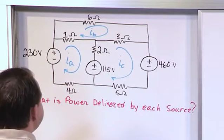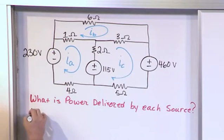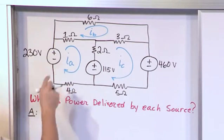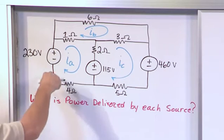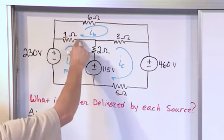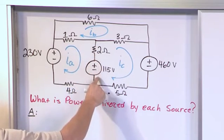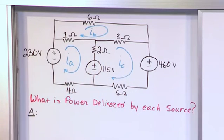All right. So let's go and get busy here. So let's look at mesh A, which is this one here. And I am going to just start in this corner, going through the source, through the 1 ohm, through the 2 ohm, through the source, back through the 4 ohm, all right?